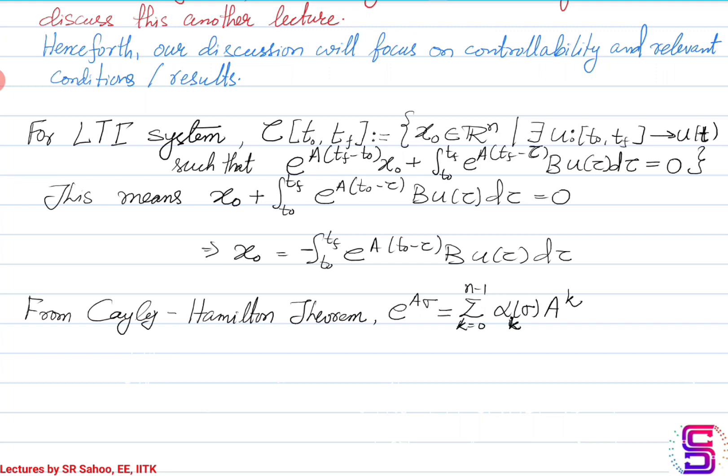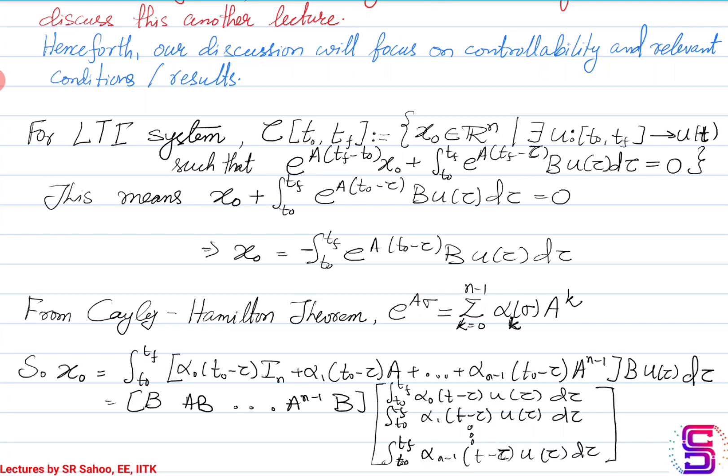Using the fact that the matrix exponential can be expressed as a finite sum series, we substitute this expression into the expression for x0. Once we do this, we can express x0 as a product of the matrix formed by B, AB, A²B, ..., A^{n-1}B multiplied by a corresponding column matrix of scalar coefficients.